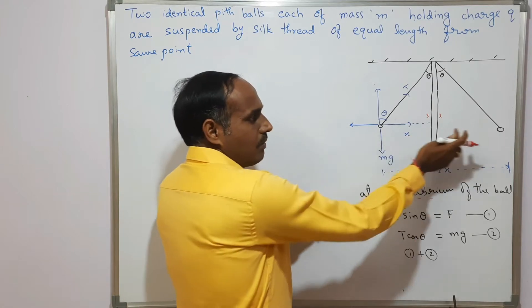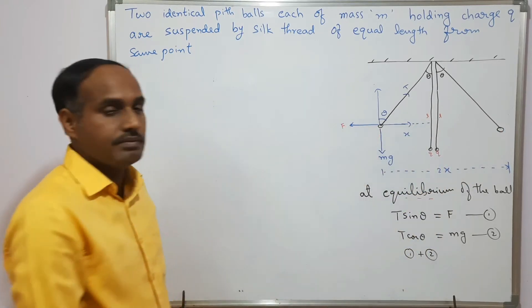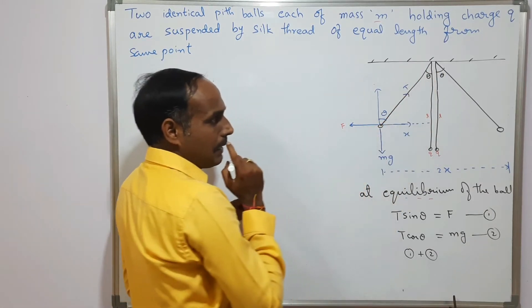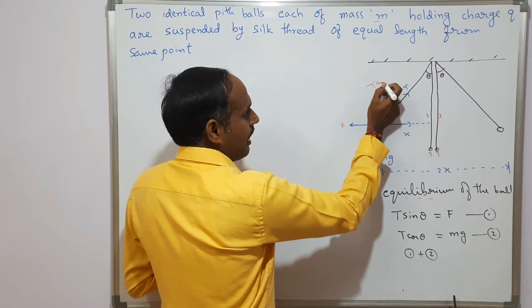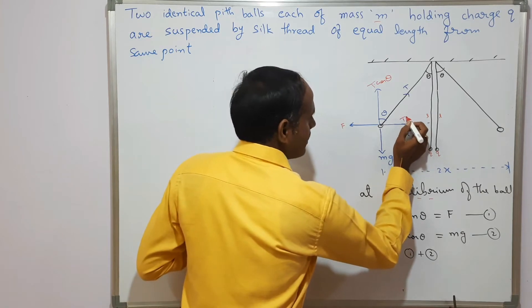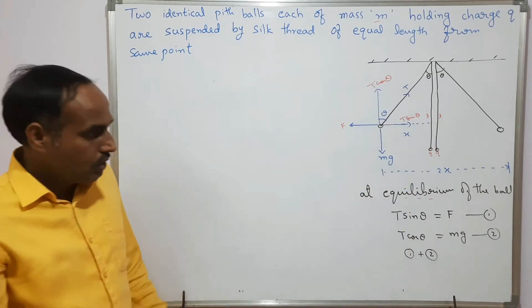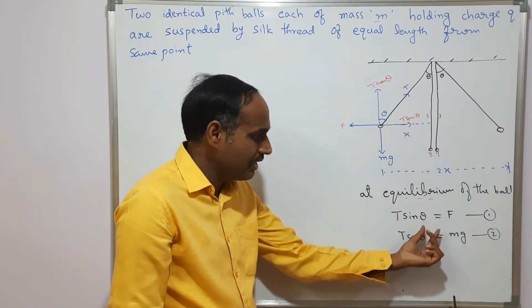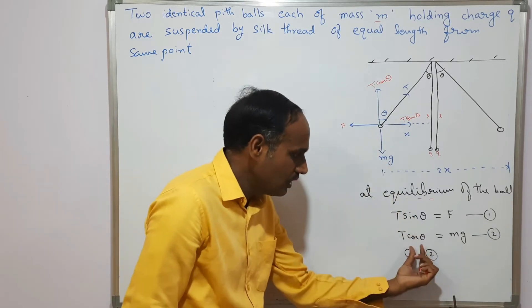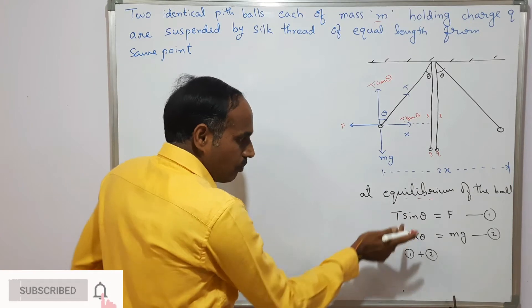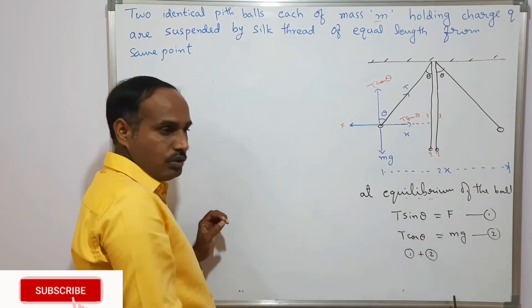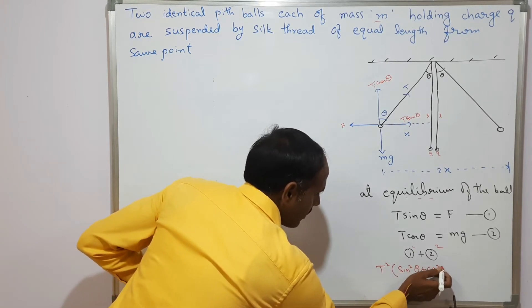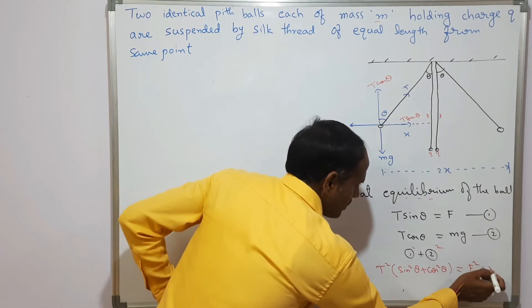The force of repulsion on the first charge is towards the left, the weight mg acts downwards, and the tension T acts away from the point of suspension. The tension has components: T sin theta balancing the repulsive force (rightward), and T cos theta balancing the weight mg downward. Squaring and adding the two equations: T² sin²θ + T² cos²θ = F² + (mg)².